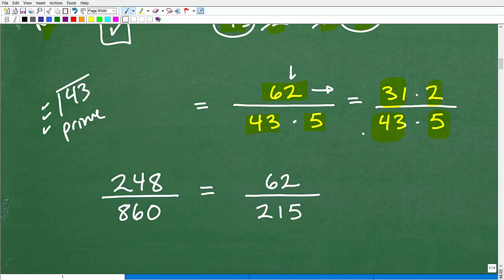So meaning we're done. Even though we can break up the 62, it's not helping us out. So really, the simplest we can write this fraction is 62 over 43 times 5. So now we'll have to figure out what 43 times 5 is. That's 215. So we have 62 in our numerator. So our original fraction was 248 over 860, and we reduced it down, simplified it to 62 over 215.